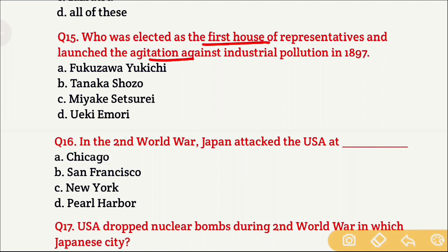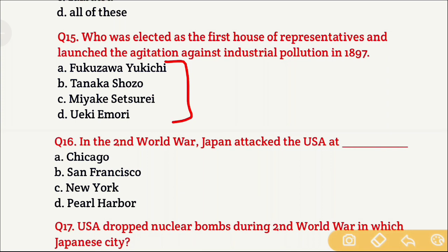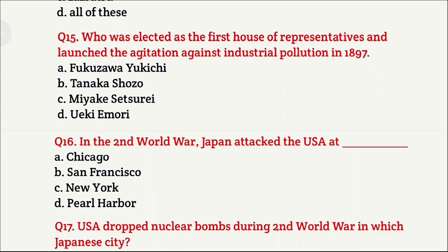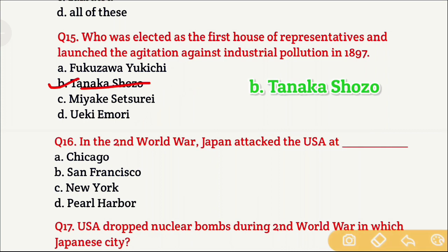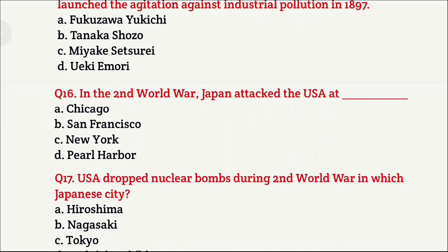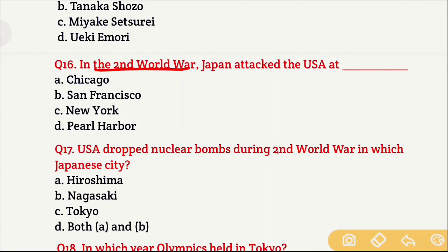Question 15: Who was elected as the first member of the House of Representatives and launched the agitation against industrial pollution in 1897? Option A is Fukuzawa Yukichi, Option B is Tanaka Shozo, Option C is Miyake Setsurei, and Option D is Yuki Imori. The right answer is Option B, which is Tanaka Shozo.